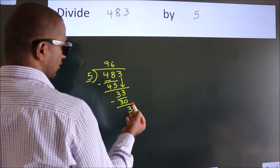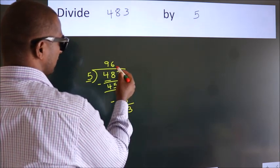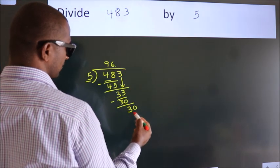After this, no more numbers to bring it down. So what we do is, we put dot take 0. So 30.